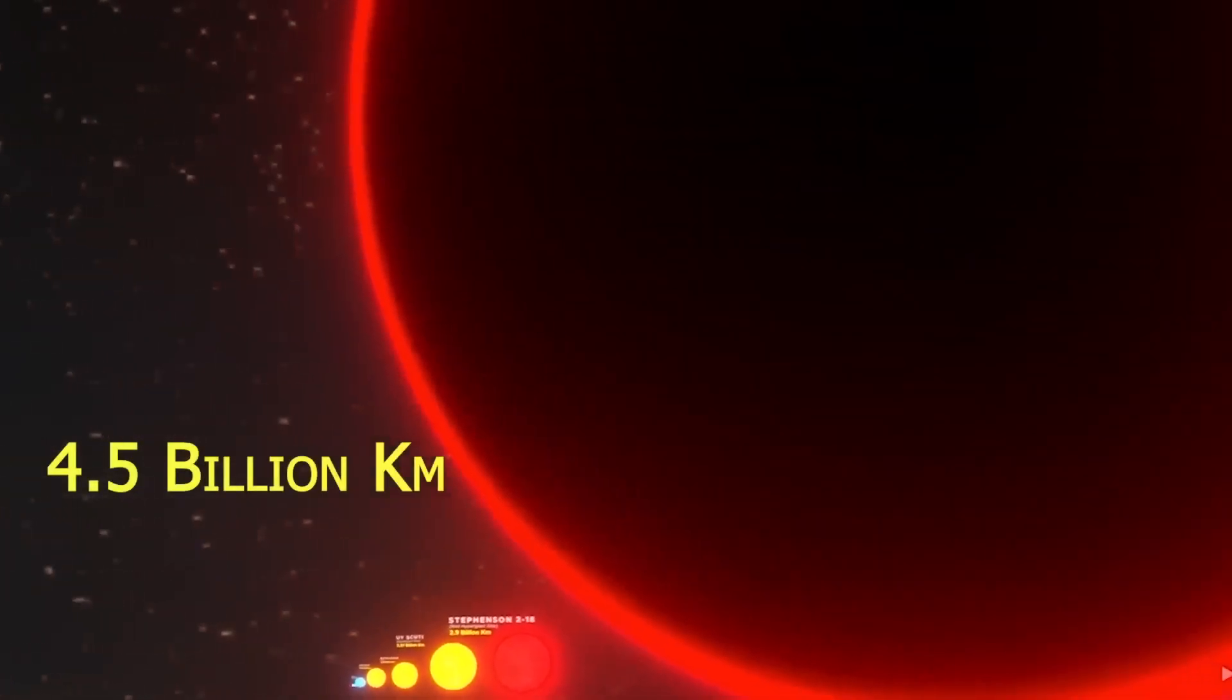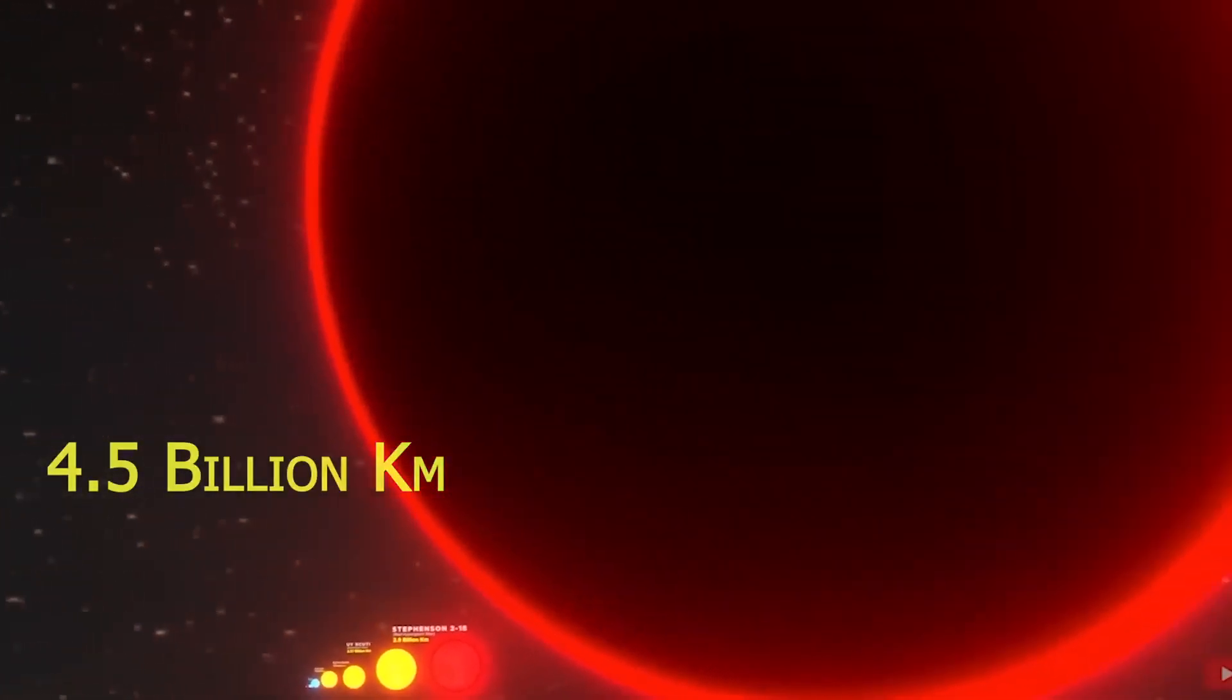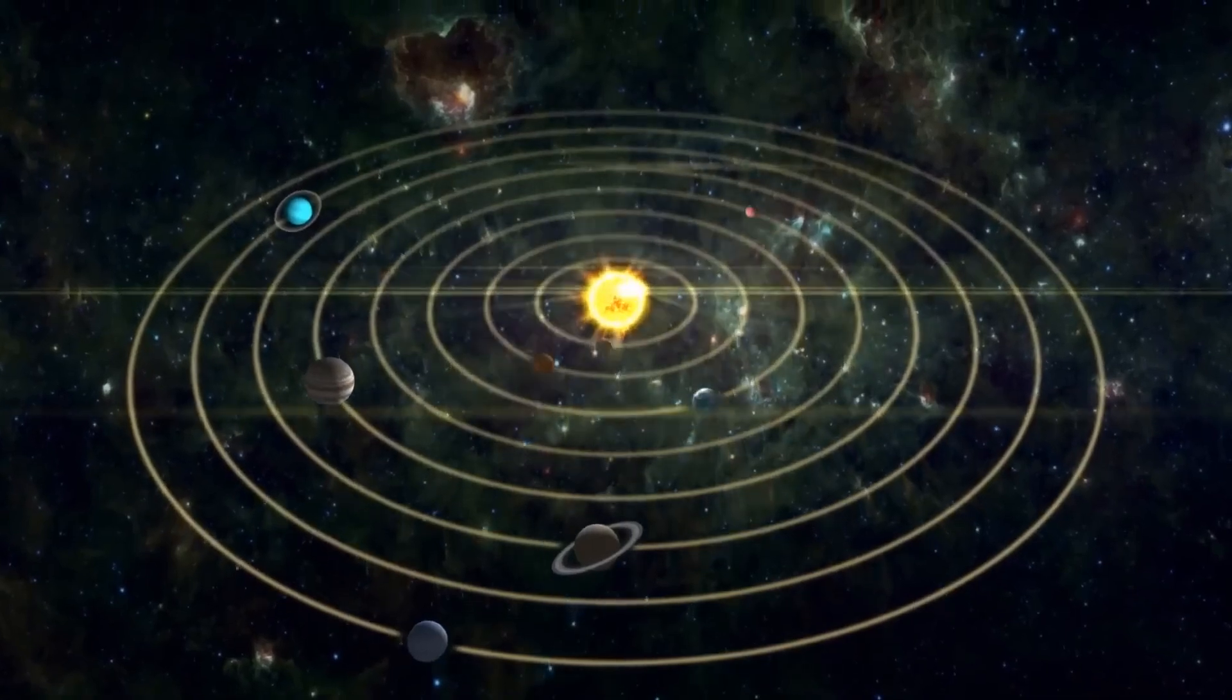Uranus, the seventh planet from the sun, is located around 2.9 billion kilometers away.